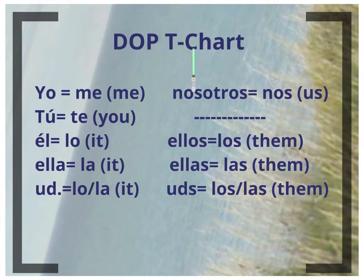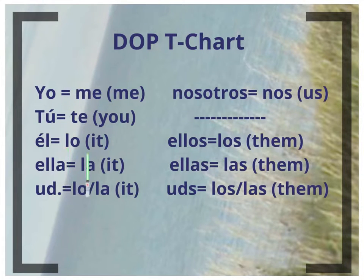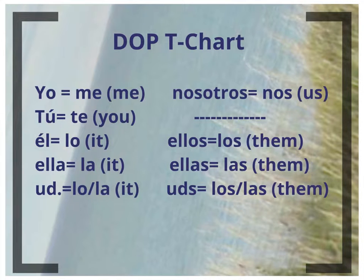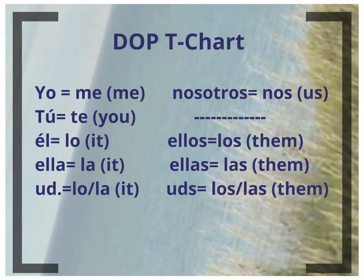This is our DOP chart. 'Me' is me. 'Te' is you. 'Lo' is it — for masculine singular nouns or a male person. 'La' is it — for a feminine singular noun or a female. For 'usted,' lo or la could be 'you' or 'it,' depending on what it is that you are talking about — noun or otherwise.